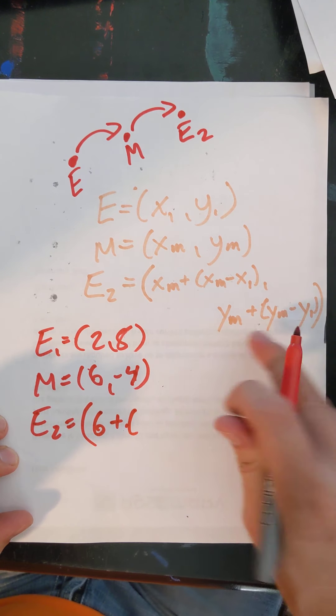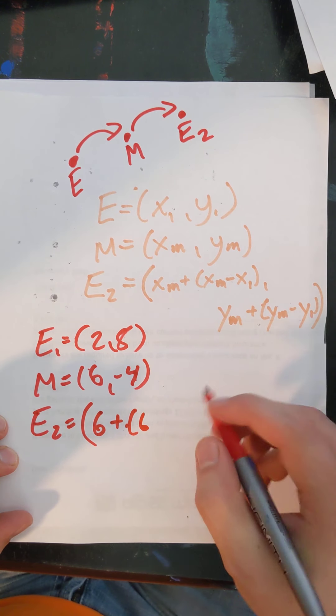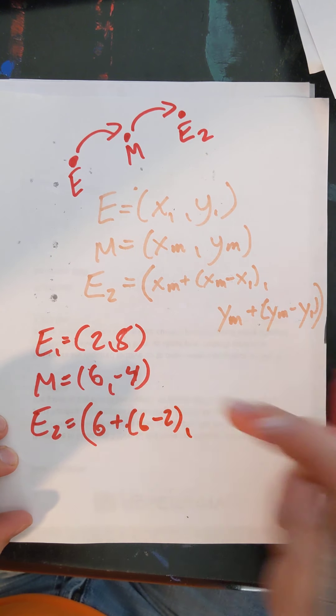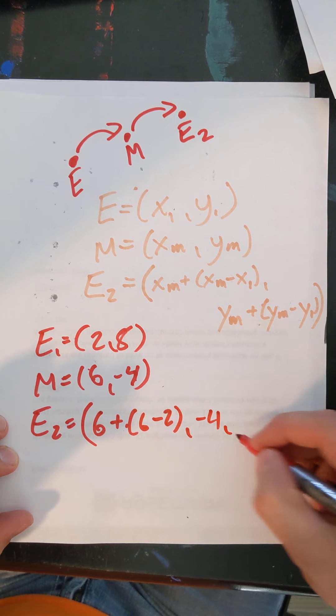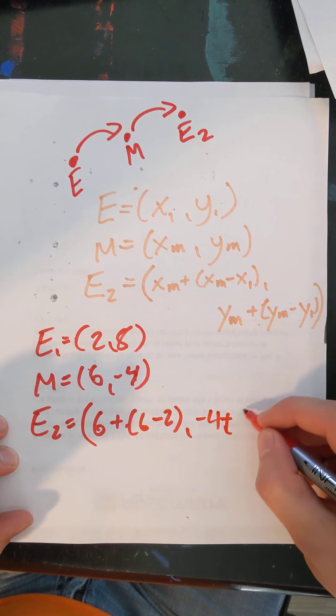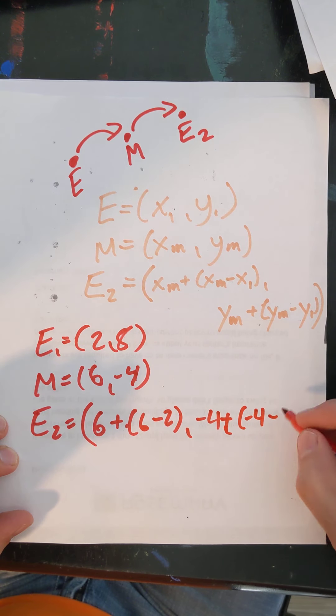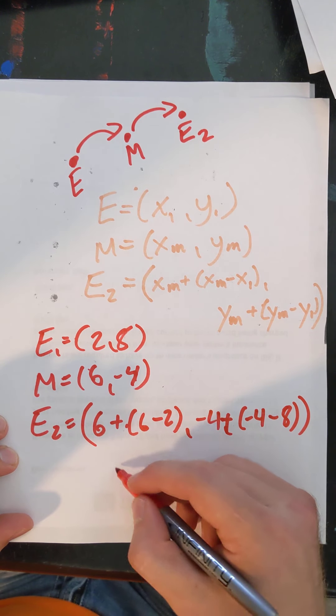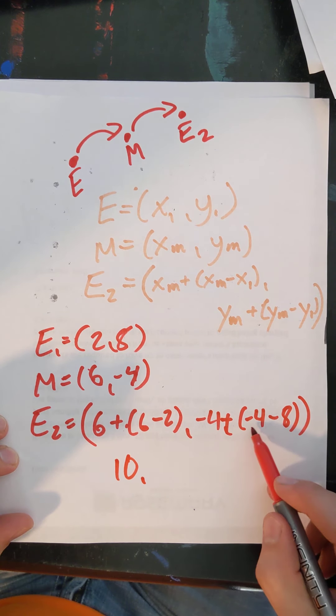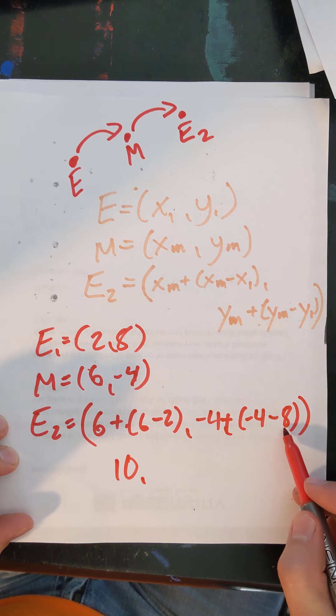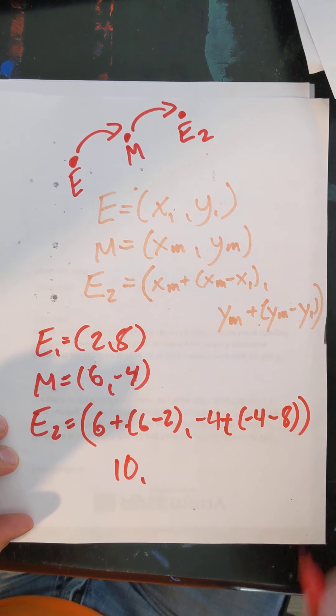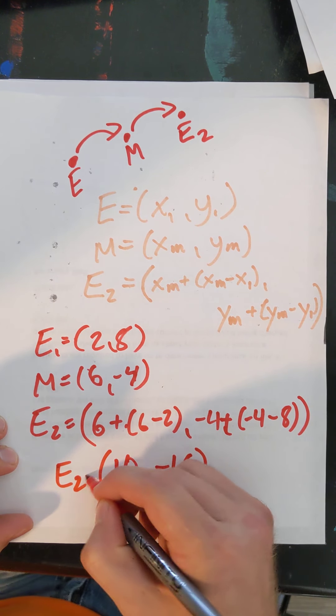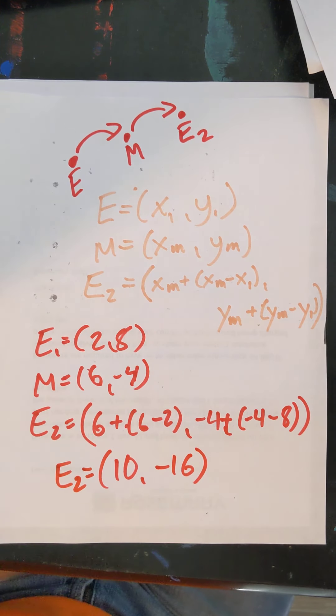6 plus midpoint, which was 6 minus 2. And then we have our other midpoint is negative 4 plus negative 4 minus 8. Okay. 6 minus 2 is 4. 4 plus 6 is 10. Negative 4 minus 8 is negative 12. Plus negative 4 is negative 16. The other endpoint is at 10, negative 16. And that's all we need to know about midpoint.